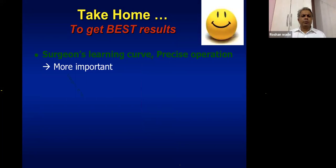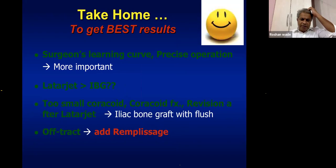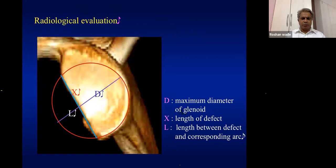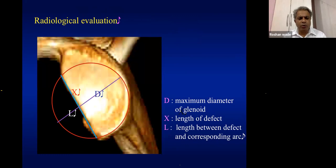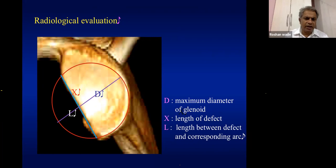The take-home message from arthroscopy is that the learning curve is important — it is a precise operation. When a big defect is present, the patient needs a Latarjet-type procedure; for off-track Hill-Sachs, remplissage is indicated. Glenoid bone loss is best assessed on the en face view of the glenoid, requiring a good relationship with your radiologist. Bone loss is calculated by measuring the length versus depth of the defect, comparing with a normal glenoid.